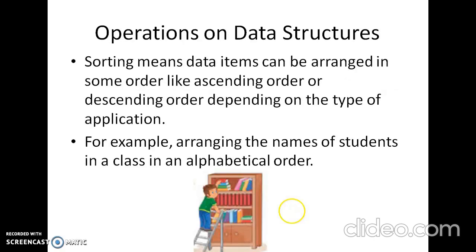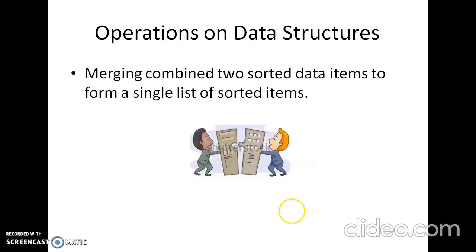Sorting means data items can be arranged in some order, whether ascending or descending, depending on the type of application. For example, arranging the names of students in alphabetical order. The last operation is merging, which means combining two sorted lists of data items to form a single sorted list. For example, when two or more operations are applied simultaneously.